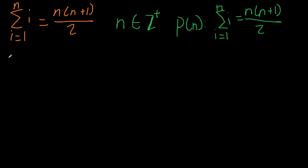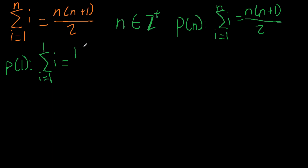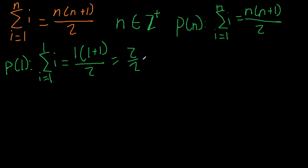The first step is the base case. The base case here is at one, so we put down p of one. If we write that down, n becomes one in the summation. On the right side, we substitute n equals one to get 1(1+1)/2, which equals one. In the summation, when i equals one, the sum is just one. Both sides equal one, so the base case holds.